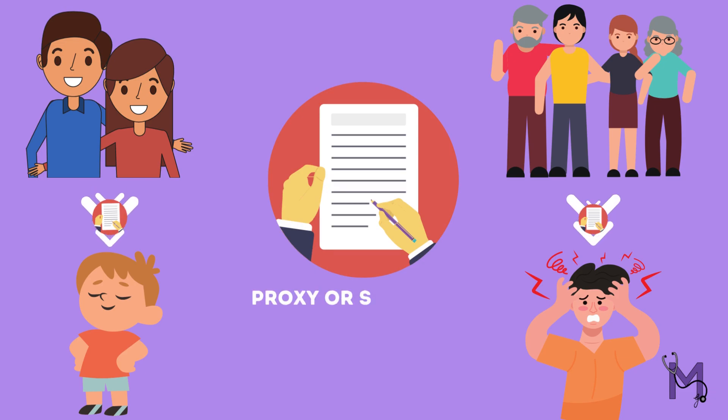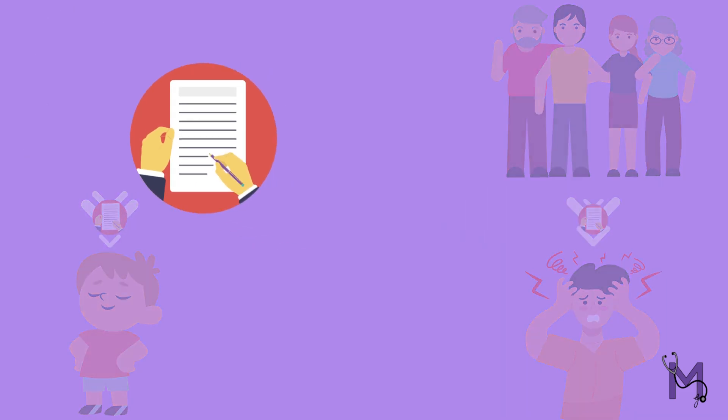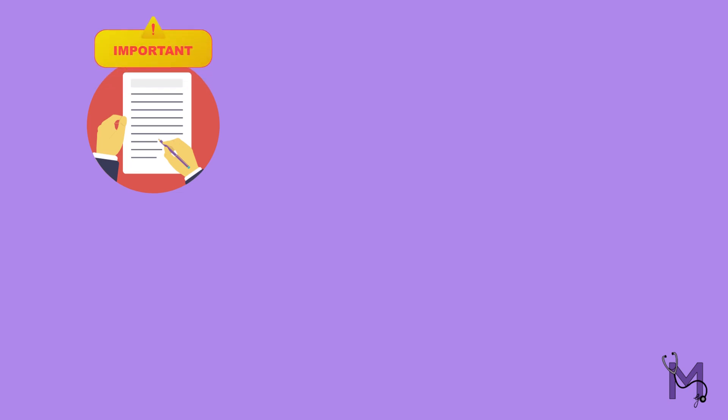In cases where a parent consents to the treatment of their child, or when a relative consents for a mentally unsound or unconscious patient, all three types of consent can take the shape of a proxy or substitute consent.